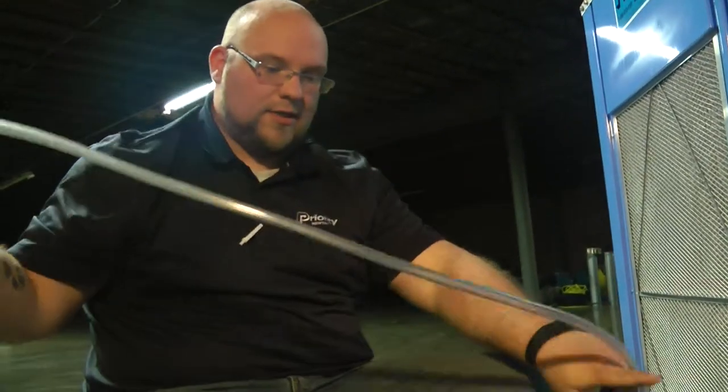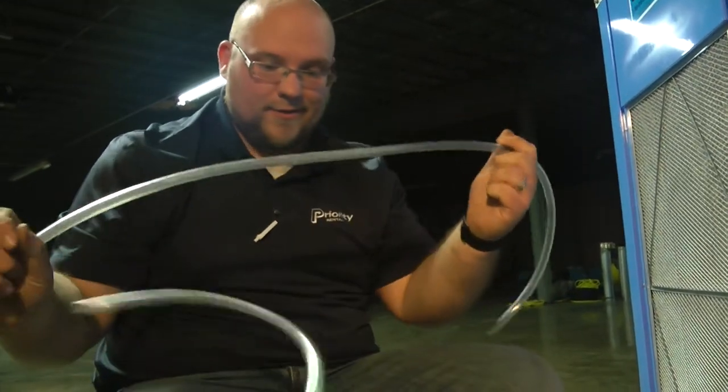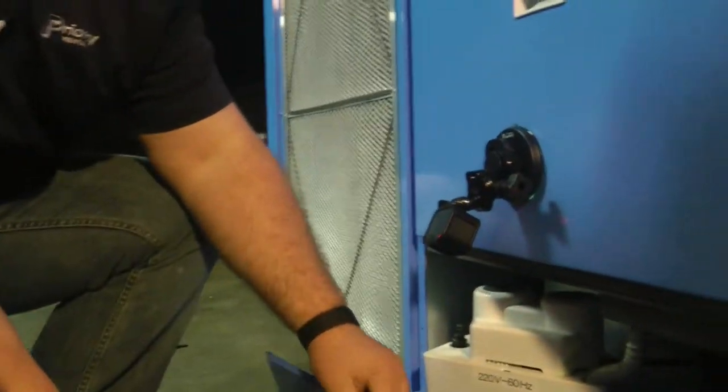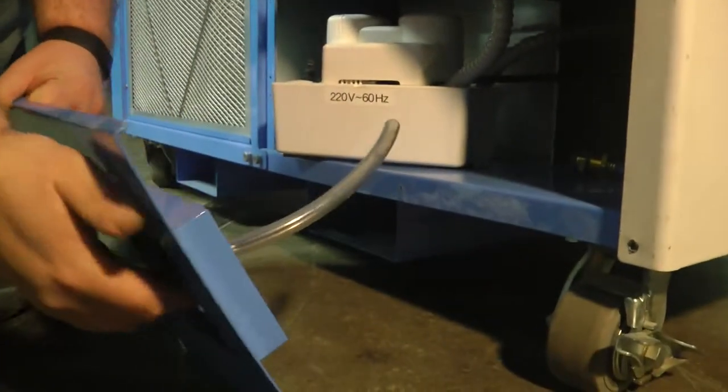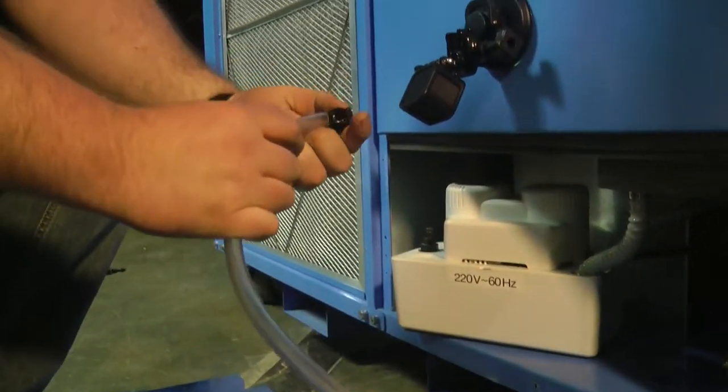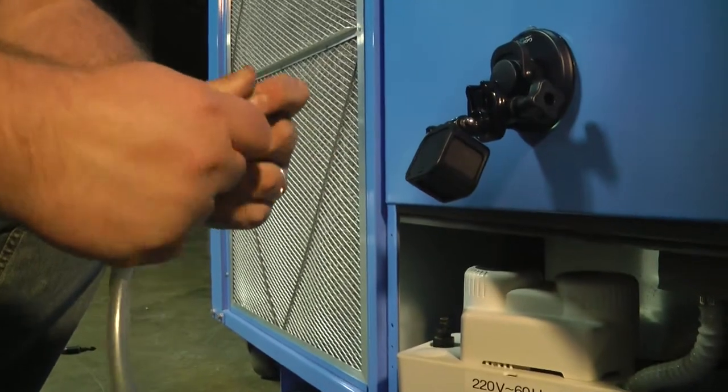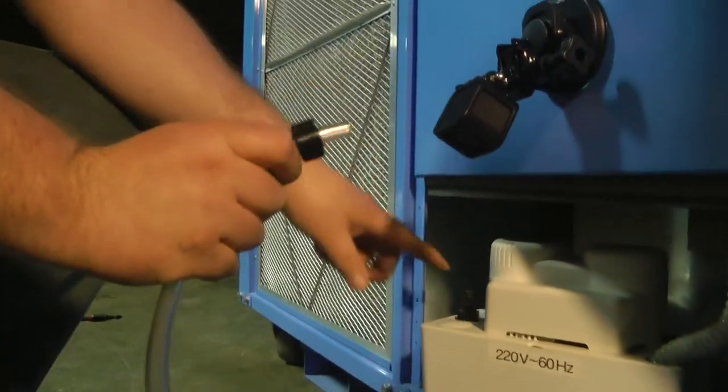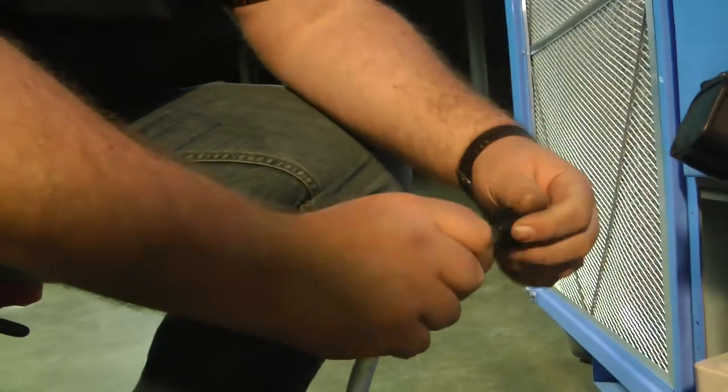So you're going to take your existing longer line, it'll be a little longer than this. And you're going to run it through that hole so it comes out. Put the wing nut on the end of the fitting like so. You're going to put this portion back on the stem and tighten that wing nut.